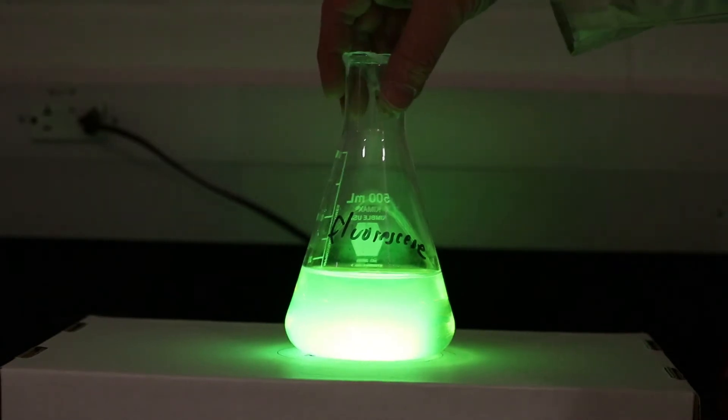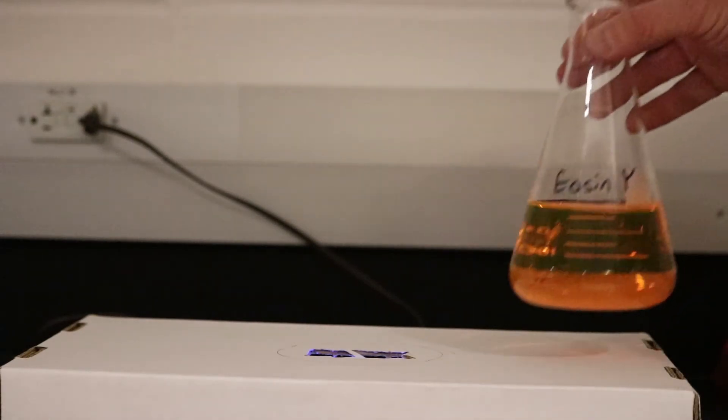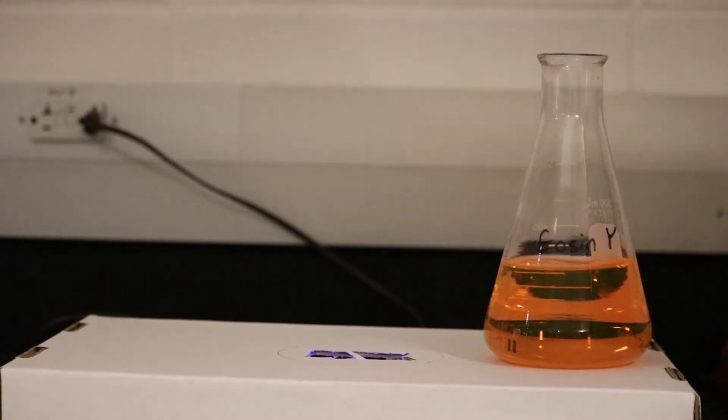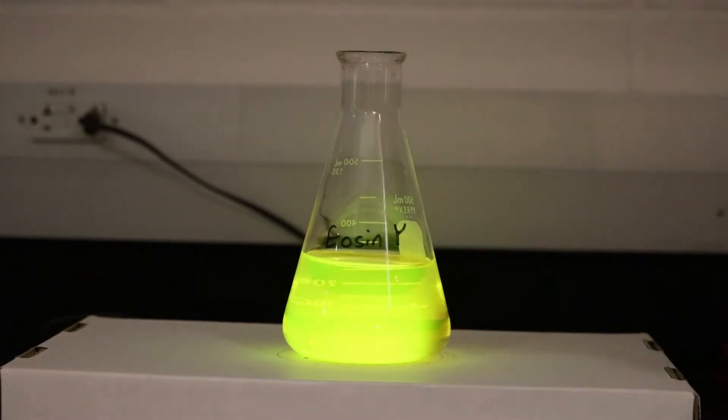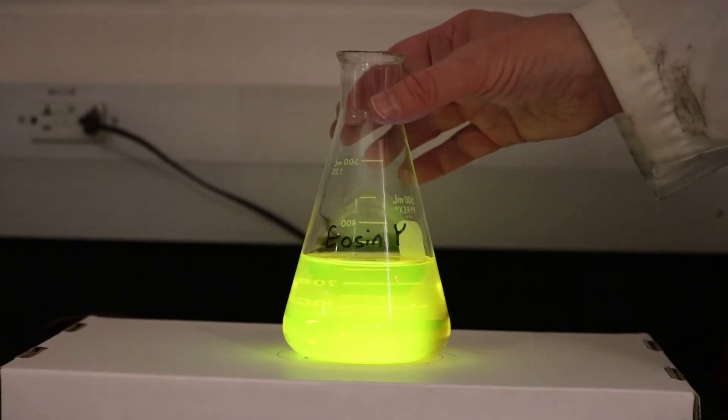I've got a few more to show you as well. Here's one that I like, this is Eosin Y. Eosin Y is sort of a peach color, and if we expose it to ultraviolet light it completely changes color, so we get this sort of a yellowish to yellowish green color that's emitted.